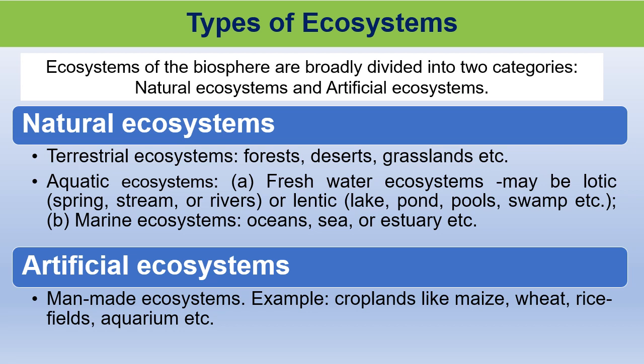Freshwater ecosystem includes both lotic and lentic. Moving water like springs, streams, or rivers are lotic, and standing water like lakes, pond, pools, swamps, etc. are lentic ecosystems. Marine ecosystem includes ocean, sea, or estuary, etc.